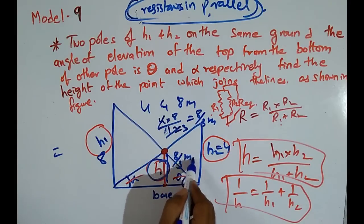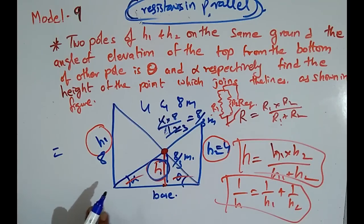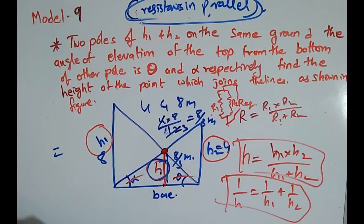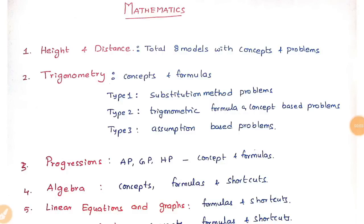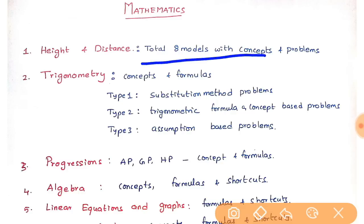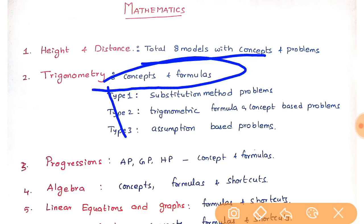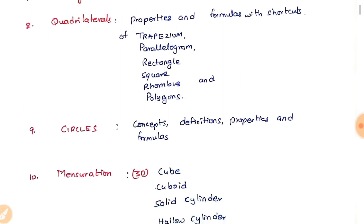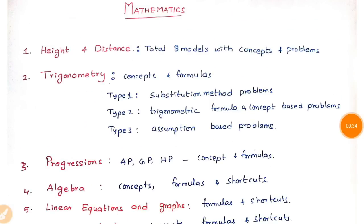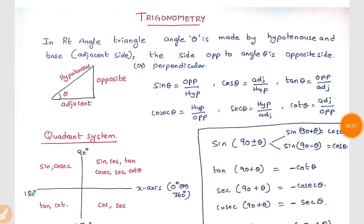With Model 9 we are done with the heights and distances problems. From the next video we will be looking into trigonometry problems. For all problems taught in these four classes of heights and distances, you can download the PDF using the link in the description box. This is the PRMAX PDF, covering heights and distances, trigonometric concepts, formulas, and problems.